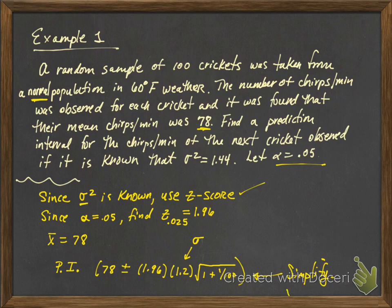Since sigma squared is known, we're going to use a z-score. Since alpha is 0.05 and we're creating an interval, our z alpha over 2 is z 0.025, which we know to be 1.96. We have the sample mean that was 78, so our prediction interval is the sample mean plus or minus our z alpha over 2 times sigma times the square root of 1 plus 1 over the size of our sample, which is 100. And of course on the exam you want to simplify that so it's clear that you give the exact interval or the interval in decimal form.